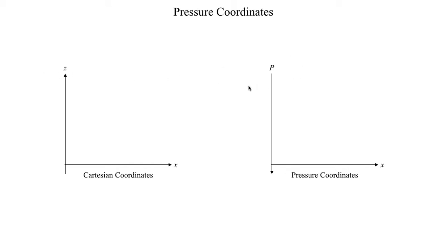So by using this pressure coordinate system, the coordinate direction is actually reversed. Going towards higher values of z means you're going towards lower values of pressure, and conversely, if you're going towards lower values of z, you're going towards higher values of pressure.